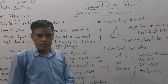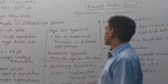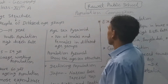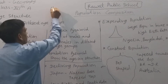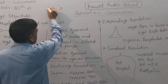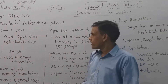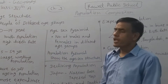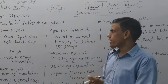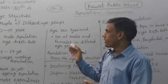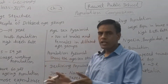Good morning students. Today we talk about Chapter 3 - Population Composition. In Chapter 3, Population Composition, we talk about age structure. Age structure means people of different age groups. There are different types of people living in a particular area or country of different age groups, meaning variations in the age group categorize the population.